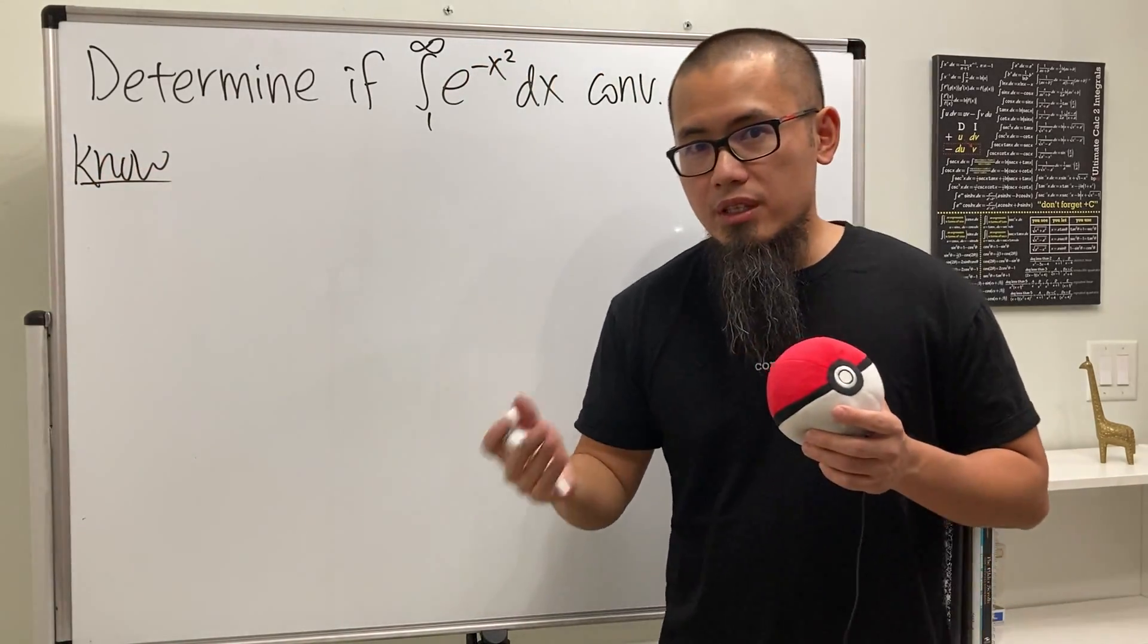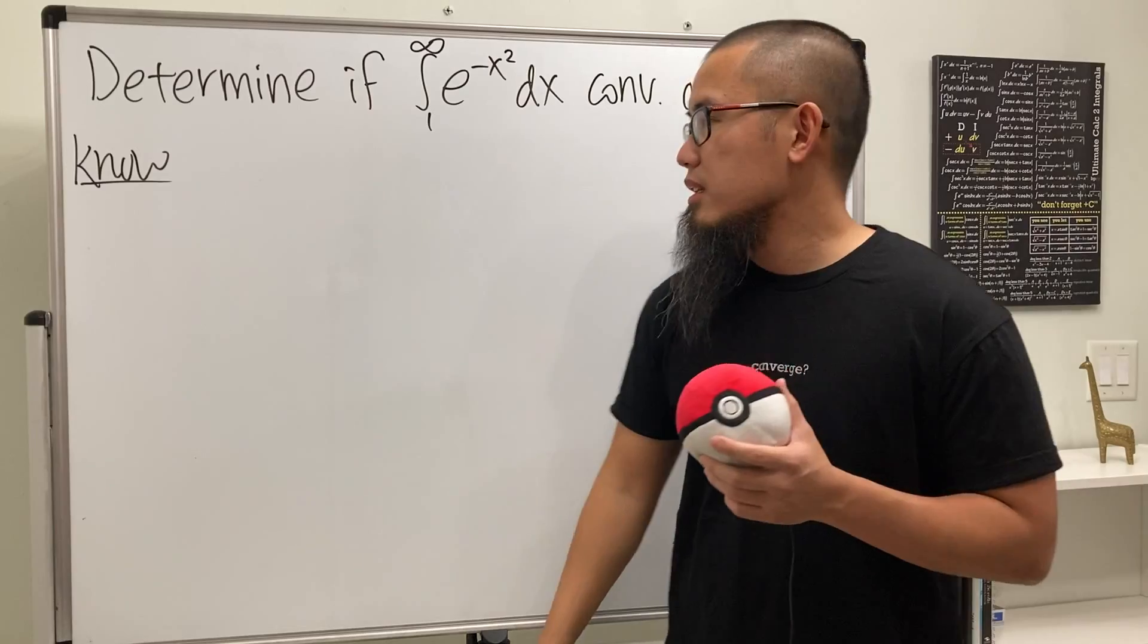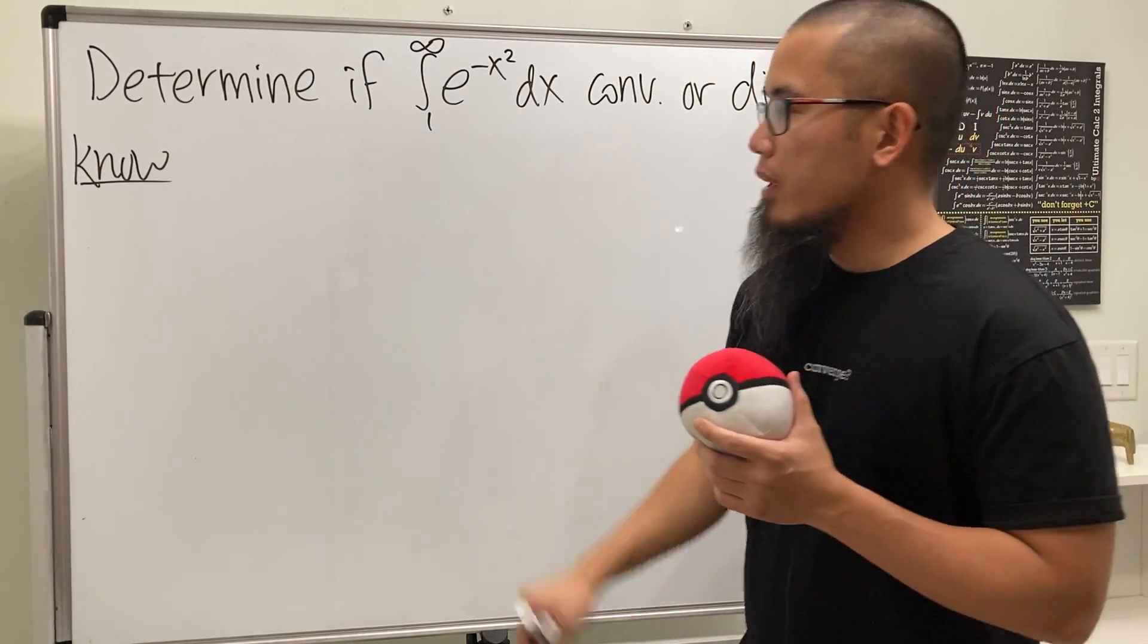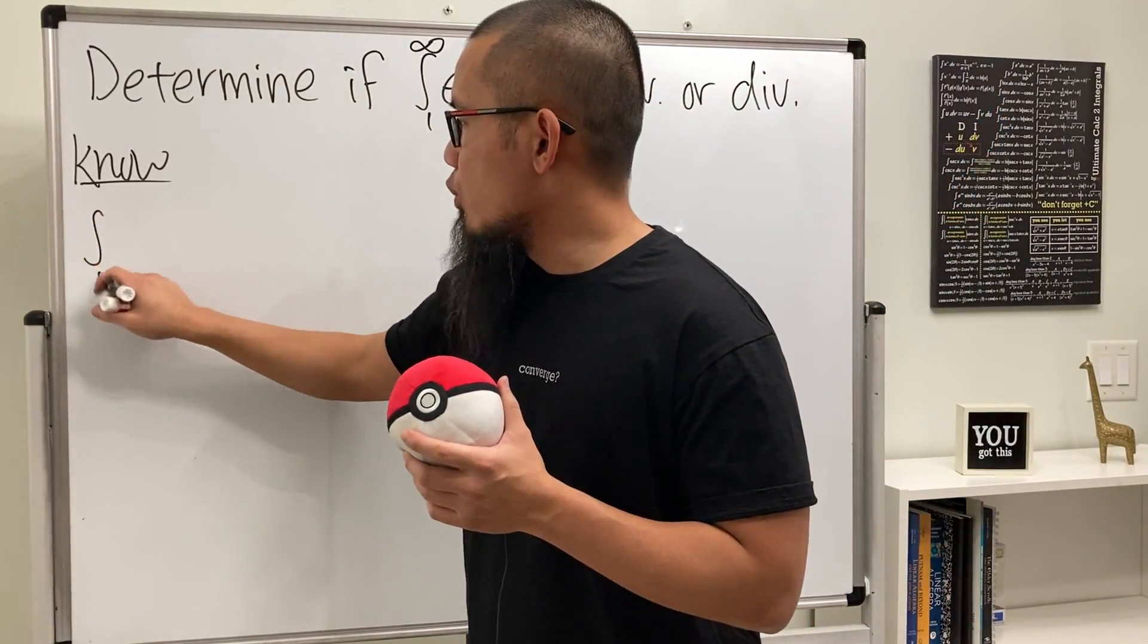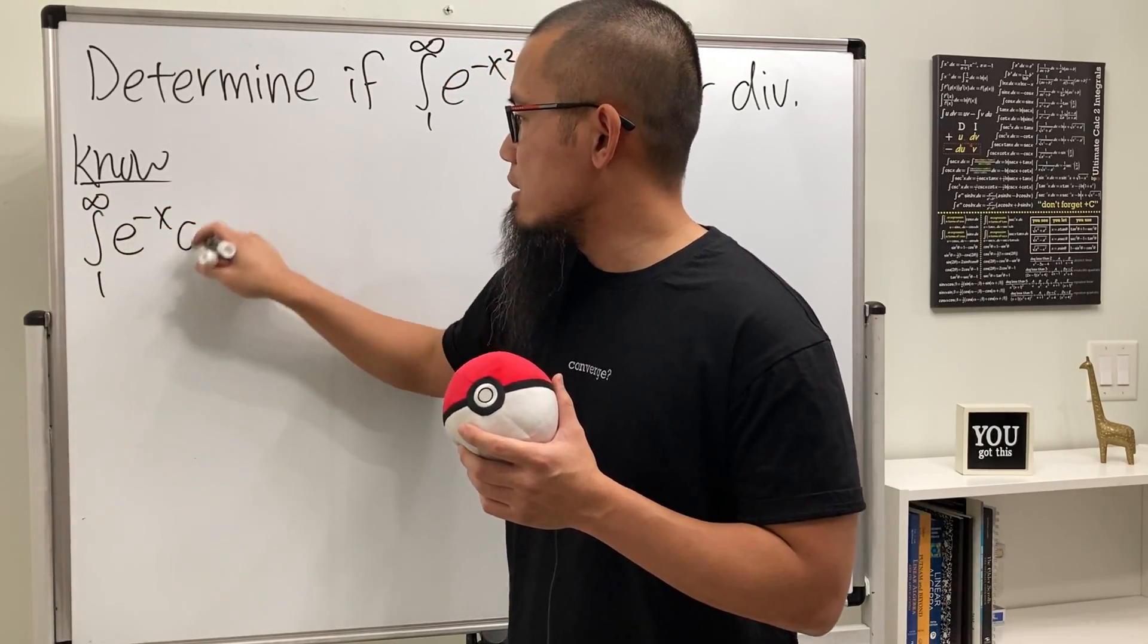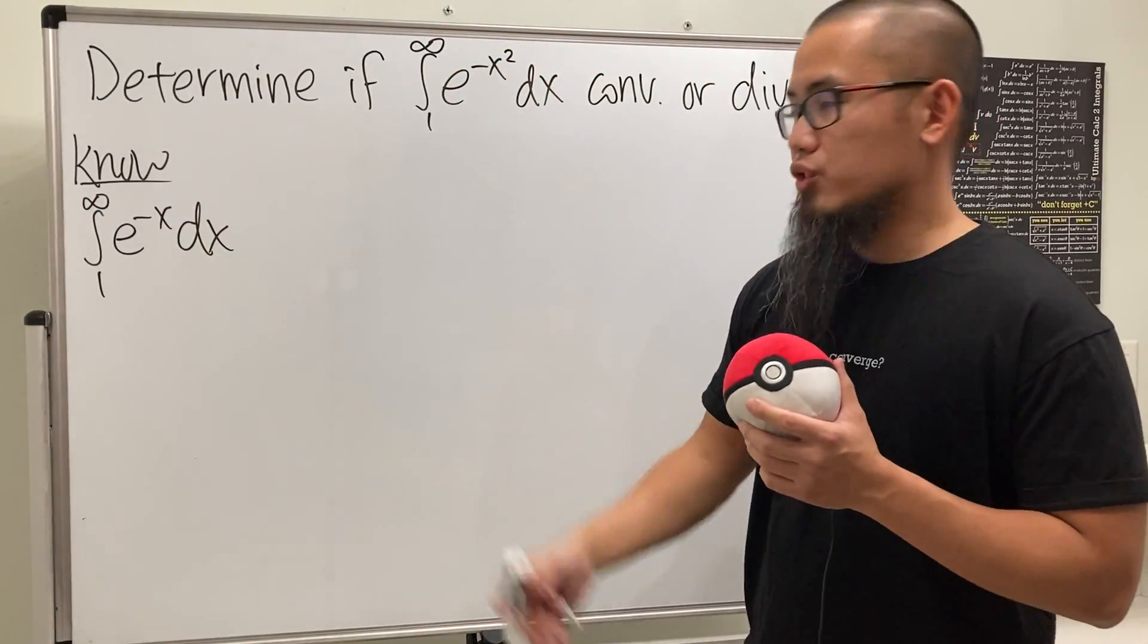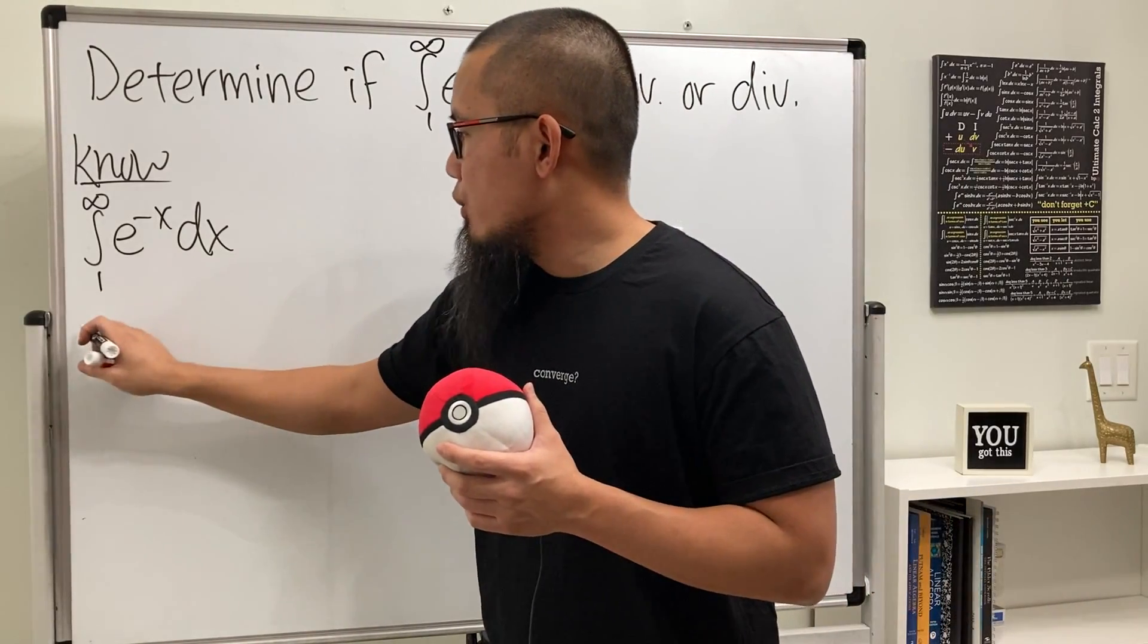This is my three step of doing the comparison theorem or the comparison test. First, write down what we know. The easier version is just the integral going from 1 to infinity of e to the negative x. We know this. Check this out.